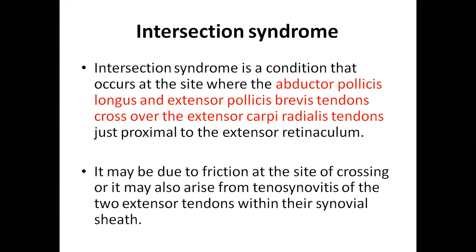Why is it known as the intersection syndrome? What are the two things that come across and meet each other, on the basis of which this syndrome is named? This intersection syndrome is basically a condition that affects the first and second compartments of the dorsal wrist extensors. It is thought to occur as a result of repetitive friction at the junction where the tendons of the first dorsal compartment cross over the second, causing irritation — a tenosynovitis. This is known as the intersection syndrome.